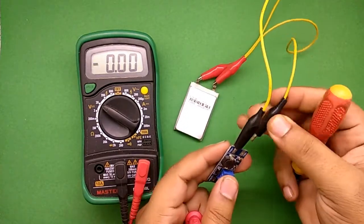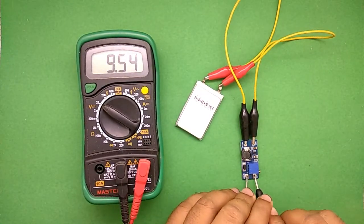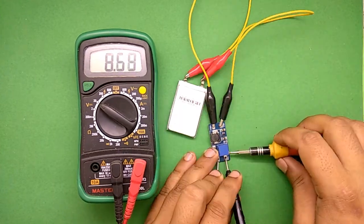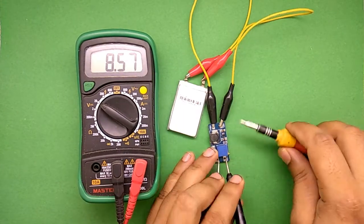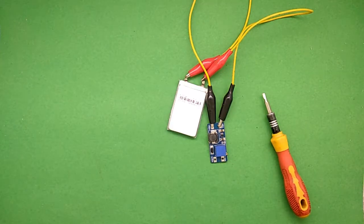Now let's use the boost converter. First adjust the voltage around 9 volts. So I'm gonna use 8.5 volts. That's sufficient to run a multimeter.